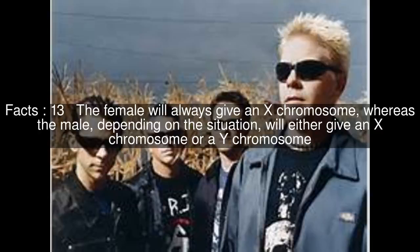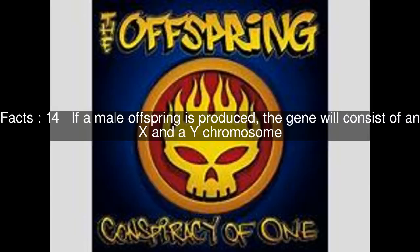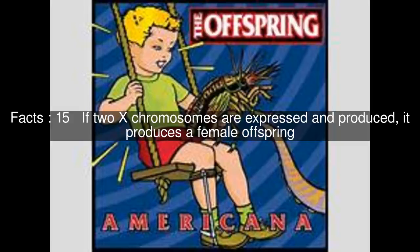The female will always give an X chromosome, whereas the male, depending on the situation, will either give an X chromosome or a Y chromosome. If a male offspring is produced, the gene will consist of an X and a Y chromosome. If two X chromosomes are expressed and produced, it produces a female offspring.